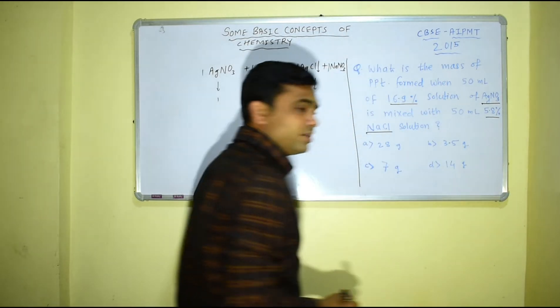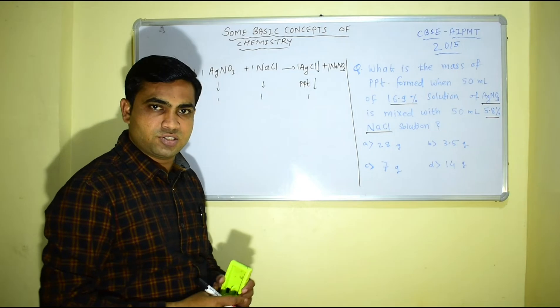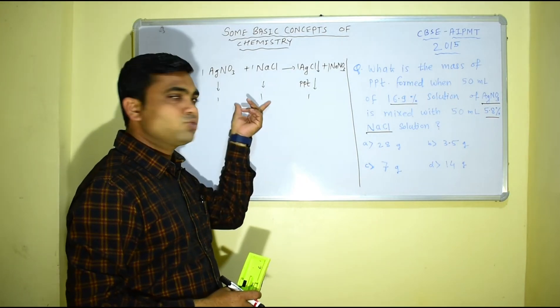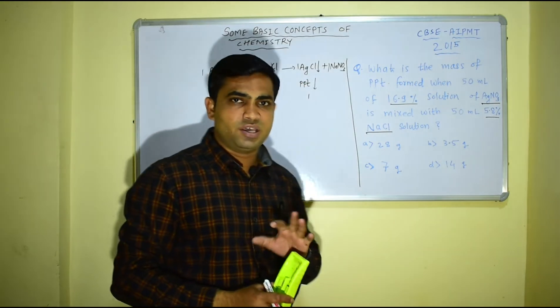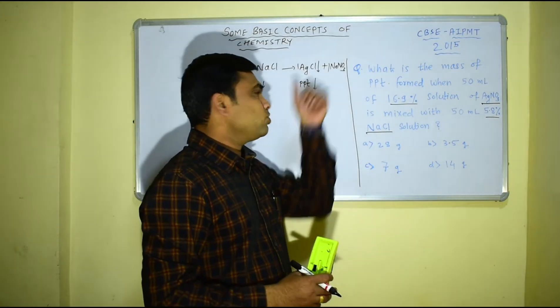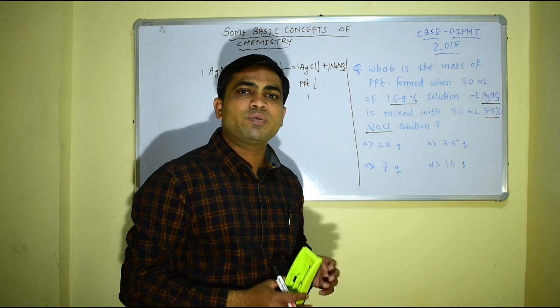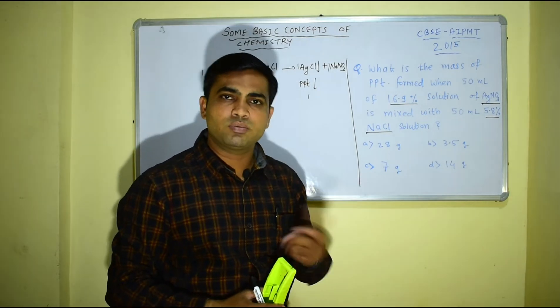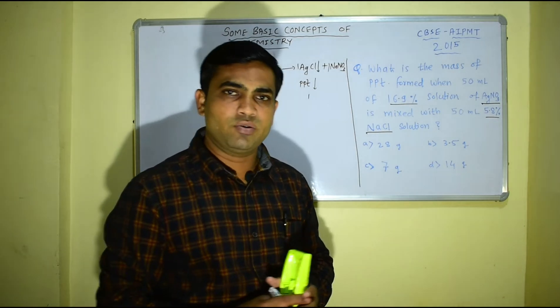Now from this percentage of silver nitrate and percentage of sodium chloride we can find number of moles of AgNO3 and NaCl, and from number of moles of these we can determine number of moles of AgCl. Once we get number of moles of AgCl then we can determine mass of AgCl formed, from moles mass can be easily determined.